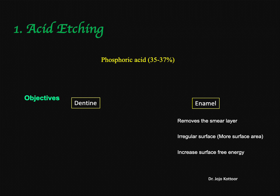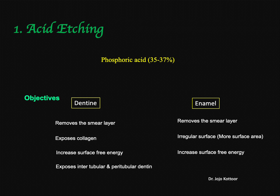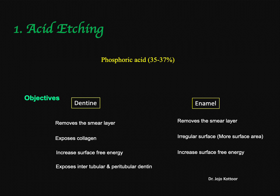The objectives on dentine are quite similar but with a slight variation. Instead of etching the enamel rods, it exposes the collagen — that means it removes the hydroxyapatite crystals on the dentine and what remains is the collagen. It also increases surface free energy and exposes the intertubular and peritubular dentine. Dentine will also be covered with the smear layer, so once the smear layer is removed and there is superficial removal of hydroxyapatite crystals, there is exposure of inter- and peritubular dentine. These are the objectives of acid etching, and they differ on enamel and dentine.